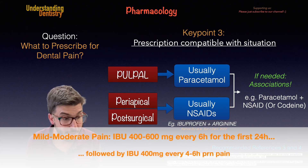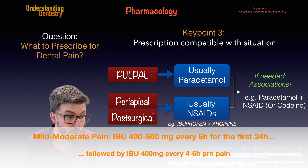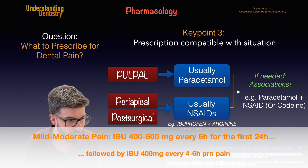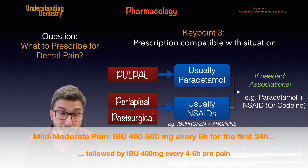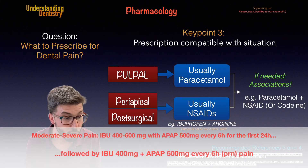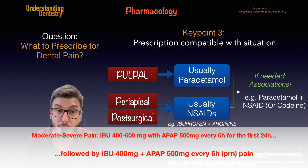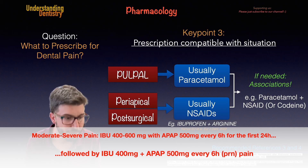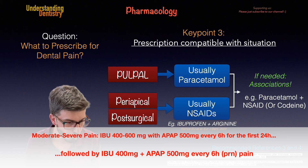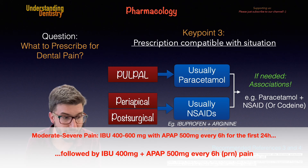For mild to moderate pain, the protocol suggests ibuprofen 400–600 mg every six hours at fixed intervals for the first 24 hours, followed by ibuprofen 400 mg every four to six hours until the pain resolves. For moderate to severe pain, ibuprofen 400–600 mg associated with paracetamol 650 mg every six hours in a fixed interval for the first 24 hours.